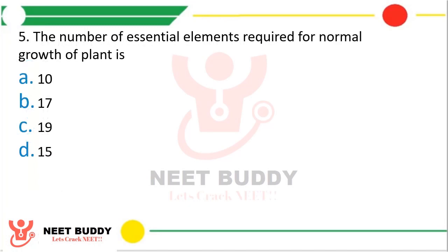Question 5: The total number of essential elements required for normal growth of a plant is? Option A, 10. Option B, 17. Option C, 19. Option D, 15. The correct answer is Option B — that is 17.